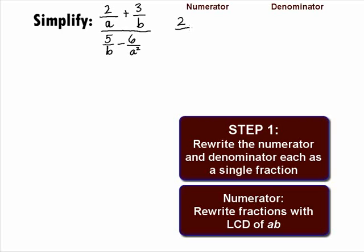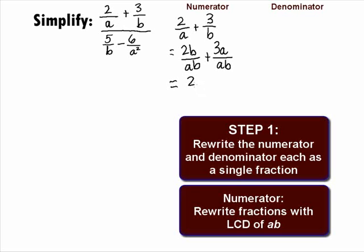We need to combine 2 over a plus 3 over b. The least common denominator here would be ab. We would have to multiply the numerator and denominator of the first fraction by b to get 2b over ab, and multiply the numerator and denominator of the second fraction by a to get 3a over ab. Now that we have a least common denominator, we can add them to be one fraction of 2b plus 3a over ab.